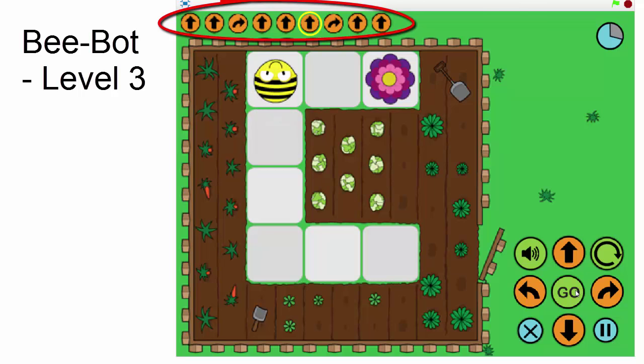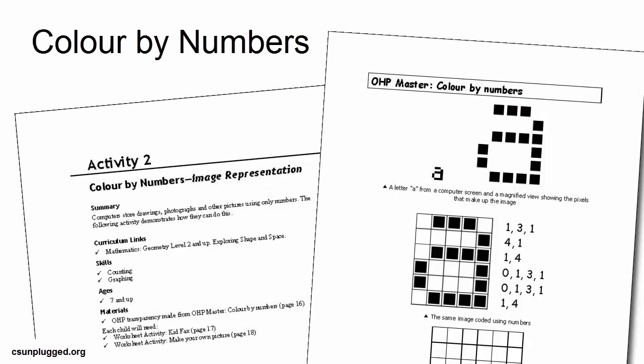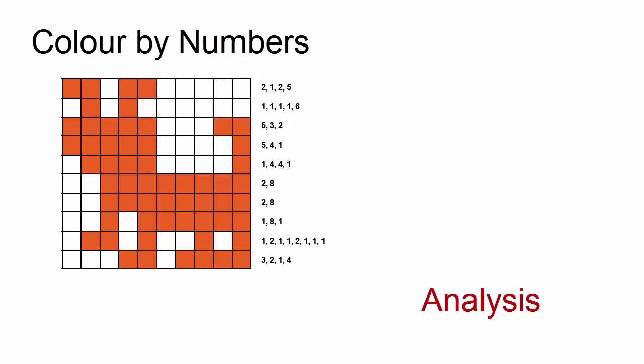Students will likely find the first few levels easy and learn how the program works. Since the complexity of the route increases by level, they will be challenged and find the decomposed steps to be very useful. We will return to Bebot again later in the training. The activity Color by Number, Image Representation, provides opportunity for both synthesis and analysis and decomposition. Students follow basic instructions to fill in squares on graph paper that collectively form a recognizable image — an example of synthesis. Then students analyze a recognizable image into squares and create instructions for their classmates. The process here is similar to how pixels on a computer work.